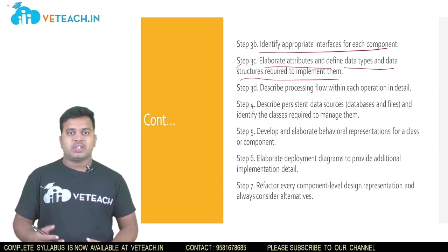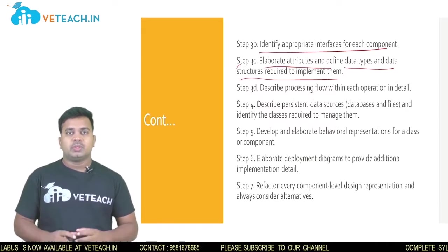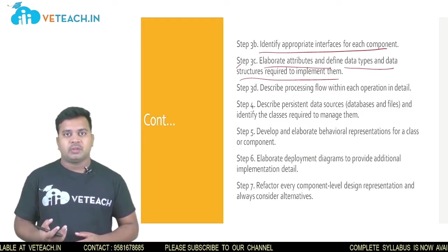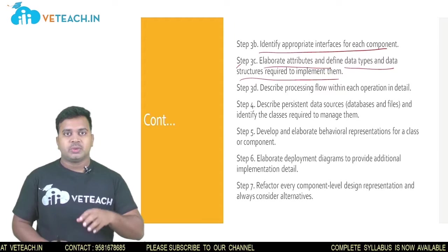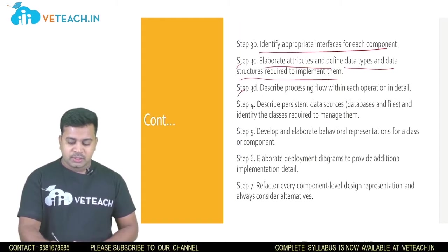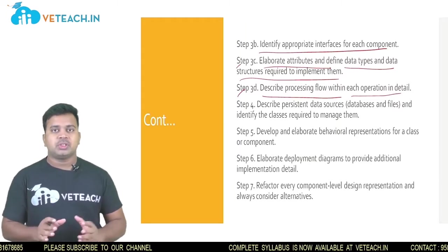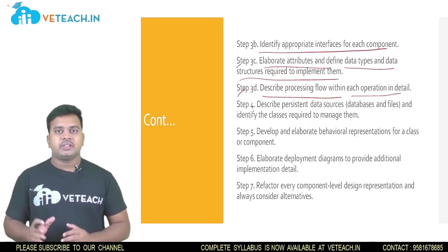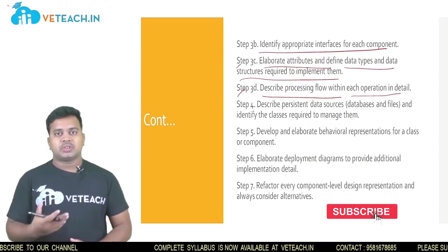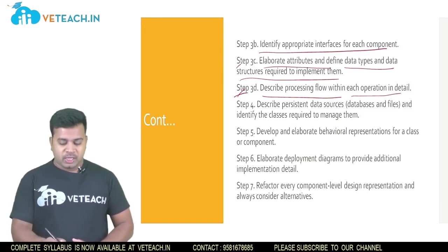The next step is to elaborate all attributes and define the data types and data structures required to implement them. You need to elaborate what data structures and data are required. Attributes focus on the class — a class has a class name, attributes, and operations — so here you focus on the attribute section. Then describe the processing flow within each operation in detail: how data is forwarded to the next steps and what process steps are required.